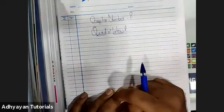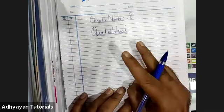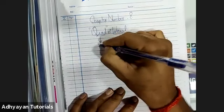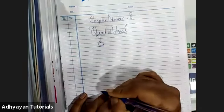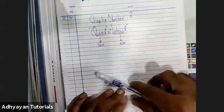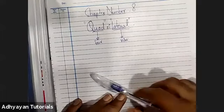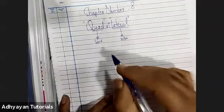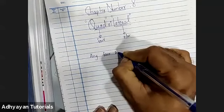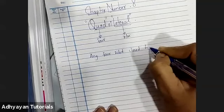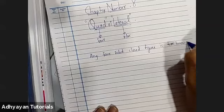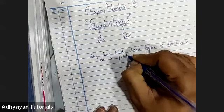So, children, this chapter — the word 'quadrilateral' is derived from two Greek words. The first Greek word is 'quad', which means four. The second Greek word is 'lateral', which means sides. So, children, here we are talking about a four-sided figure. Any four-sided closed figure is known as a quadrilateral.